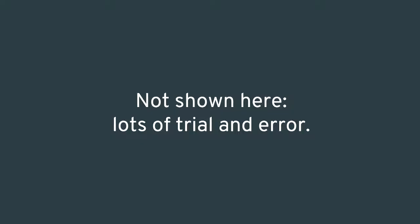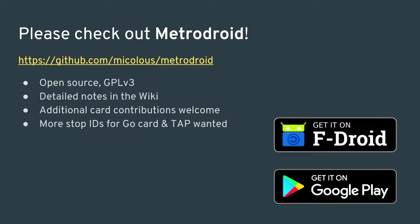I may have made this look really easy — figuring out data formats involves a lot of trial and error. The general process has been to look for patterns, make some assertions, test them, and repeat — then get lots of angry feedback from users when stuff breaks. I have a project called MetroDroid; it is open source software. I keep a wiki with documentation about each card format I've implemented. It's available on F-Droid and the Google Play Store. Additional card reader contributions are welcome, and I'm also after more stop IDs for the Go card and TAP card.